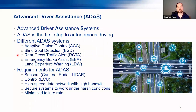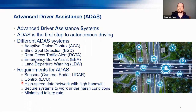The most important requirement is to have sensors — cameras, radar, lidar. Then you need control systems and must combine those into a high-speed data network with high bandwidth. It's also very important to have a secure system that works under harsh conditions: temperature, vibration, water, or ice depending on where you're driving. Finally, we need a minimized failure rate, because any failure in a braking system could lead to a serious problem.